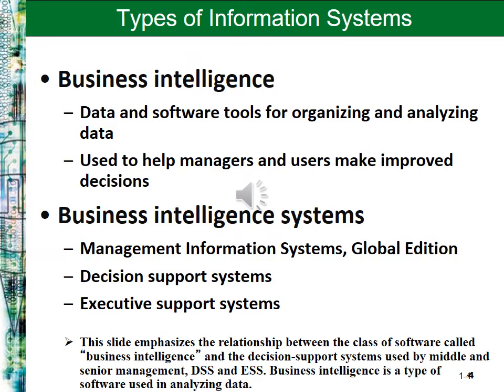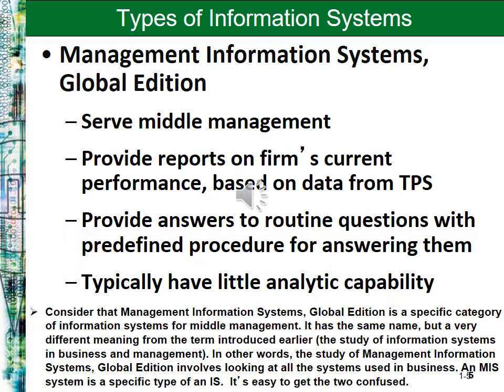This slide explains the relationship between a software program called Business Intelligence and the Decision Support System and the Executive Support Systems used by middle and senior management. Business Intelligence is a type of software used in analyzing data. The Management Information System is a specific type of information system — it serves middle managers and provides reports on the firm's current performance based on data from the Transaction Processing System, with answers to routine questions and little analytic capability.